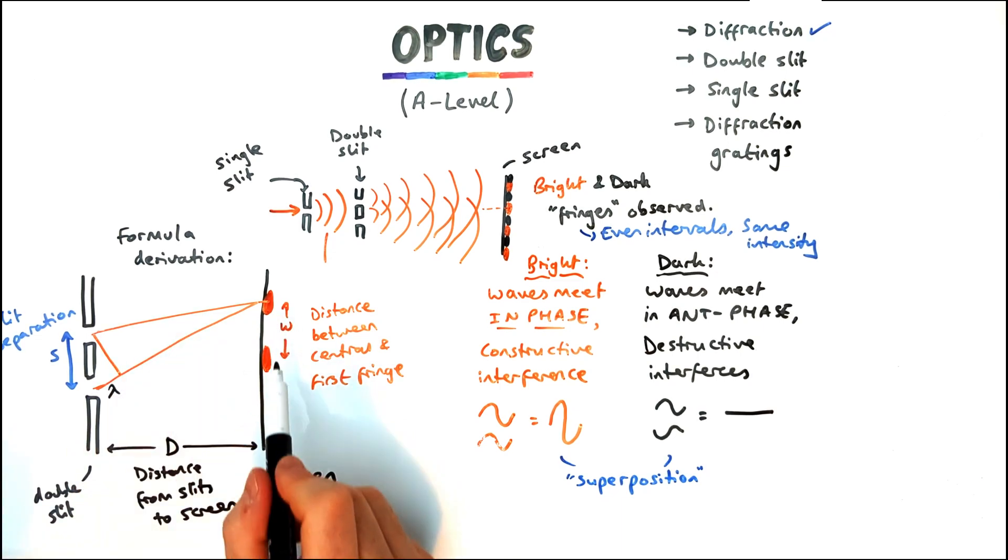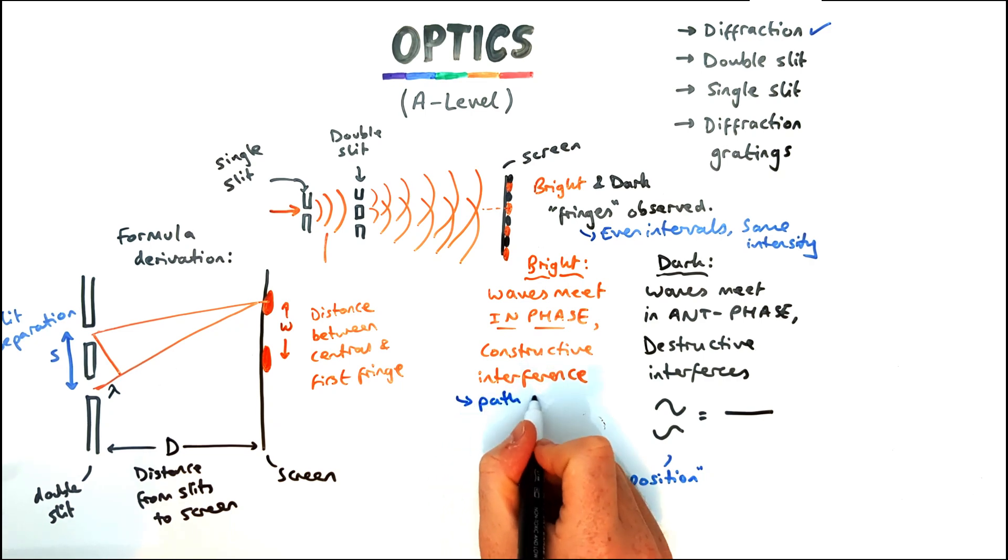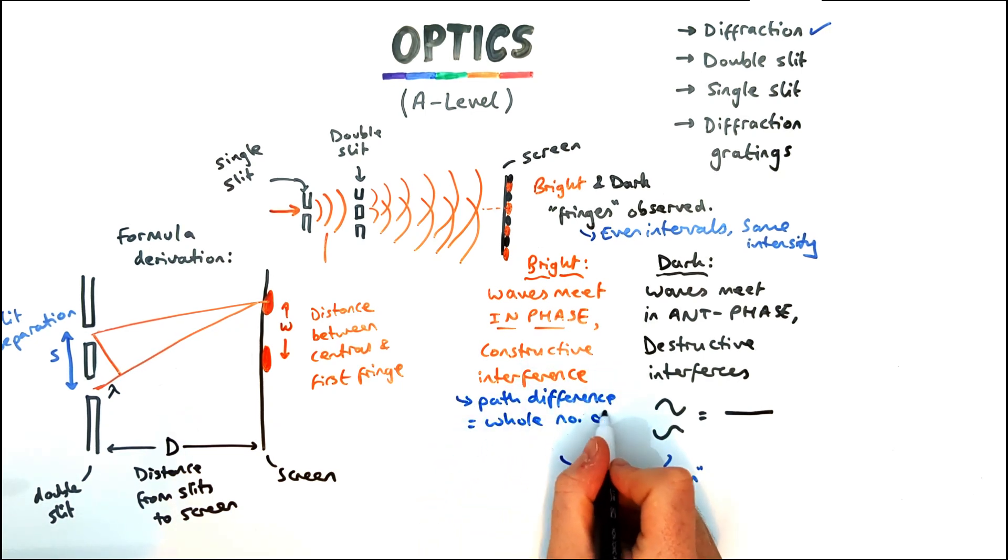But it's really important to note that those two rays must be in phase. The path difference of those two waves has to be one wavelength. For each fringe it has to be a whole number of wavelengths. For this first fringe it has to be one wavelength difference because the peak has to meet with the peak of the other.